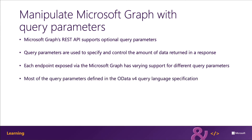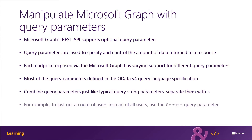For example, the count query parameter is supported by the contacts endpoint but is not supported for directory objects like users and groups. Query parameters are added to the query string portion of a URL and have a dollar prefix. Each query parameter has a different syntax for usage.